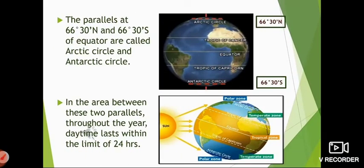In the areas between the Arctic Circle and Antarctic Circle, throughout the year daytime lasts within the limit of 24 hours — meaning it is less than 24 hours only. This is because the sun rays reaching these areas are slanting. You can see the arrows showing yellow sun rays near the Arctic Circle and above the Tropic of Cancer — they are reaching at a slant. So here, daytime lasts within the limit of 24 hours.